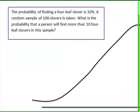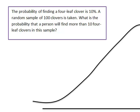We're going to look at a 4-leaf clover problem. The probability of finding a 4-leaf clover is 10%. If we take a random sample of 100 clovers, what's the probability that a person will find more than 10 4-leaf clovers in this sample? It's a binomial distribution because it's either a success or a failure — 10% probability we find one, 90% probability that we don't. Because n times p is greater than 5, we can make the assumption of normal distribution and proceed to transform this from binomial to normal.